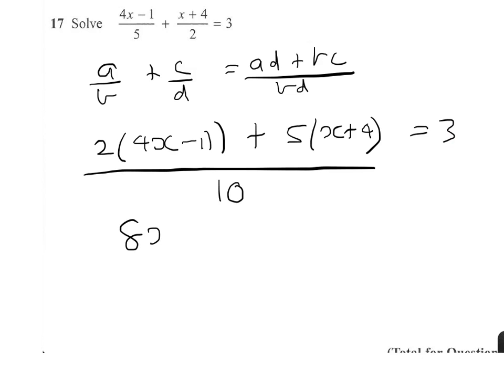So let's do that. So 2 times 4x is 8x minus 2 plus 5x plus 20. And remember, I'm moving that 10 across, becomes 10 times 3 equals 30.